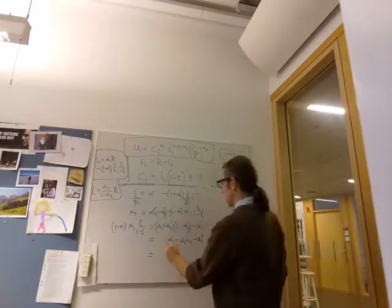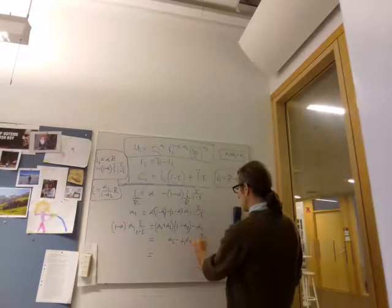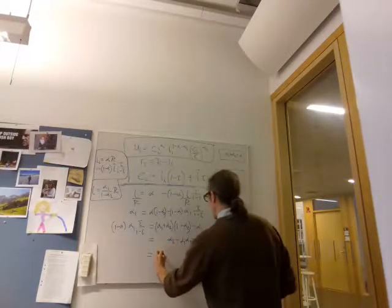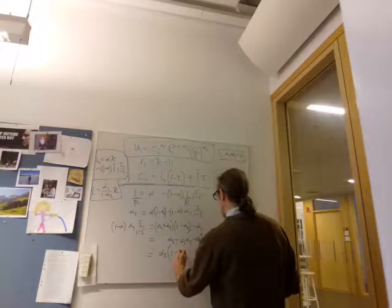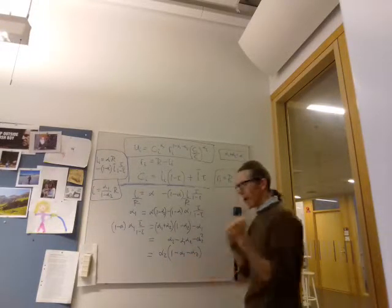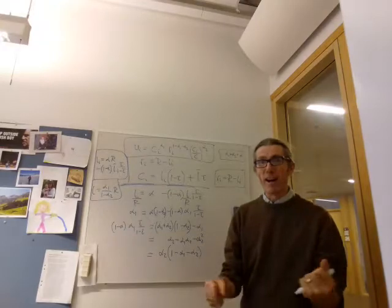And for that we can take out alpha 2, can't we? We've got alpha 2's everywhere here. So we've got alpha 2 times 1 minus alpha 1 minus alpha 2, which is alpha.